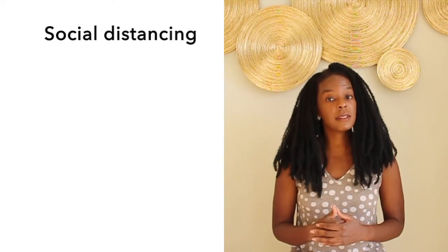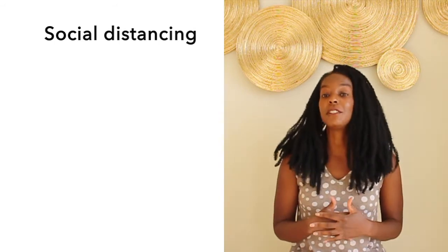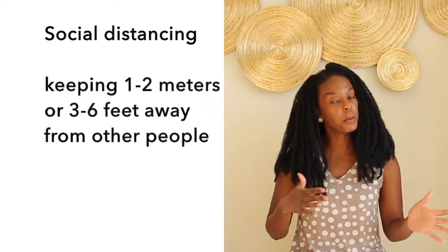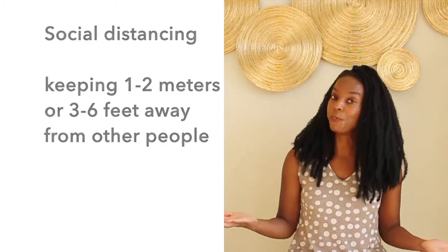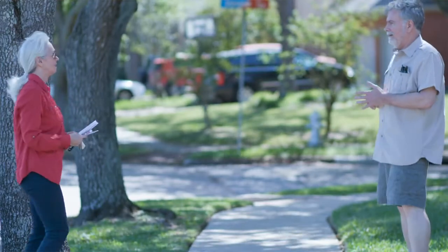This is why social distancing is so important. Social distancing means that you try to keep one meter or three feet away from other people whenever you leave your home. Keeping a safe distance is one way to avoid transmitting the disease. However, because social distancing is so difficult in large cities, stay-at-home orders and lockdown restrictions are also sometimes necessary to decrease the spread of the disease.